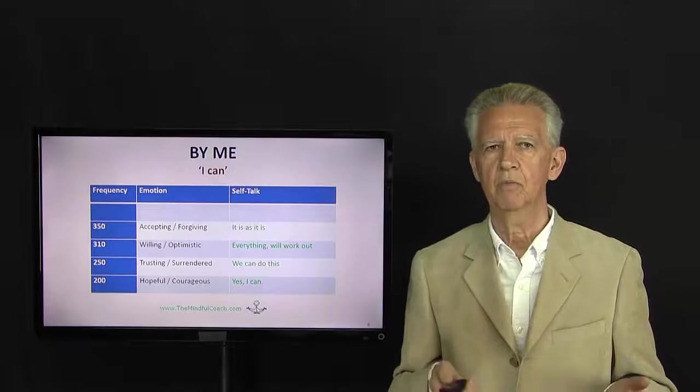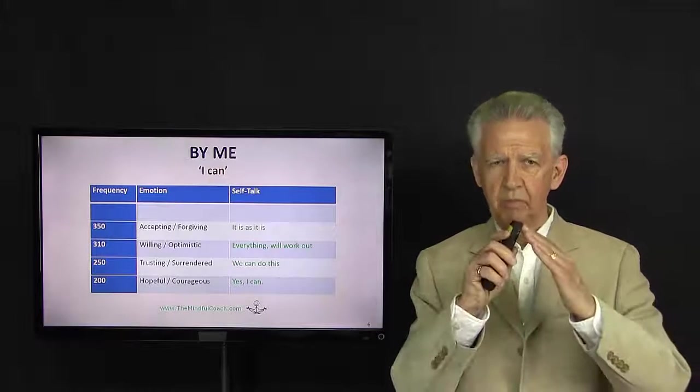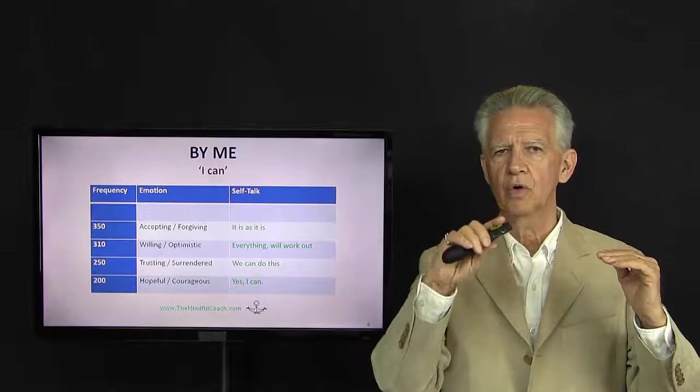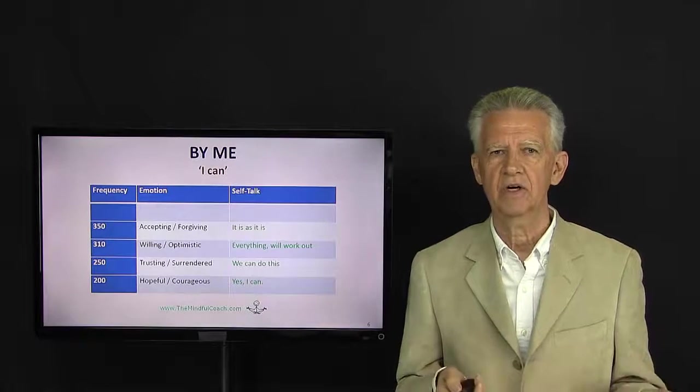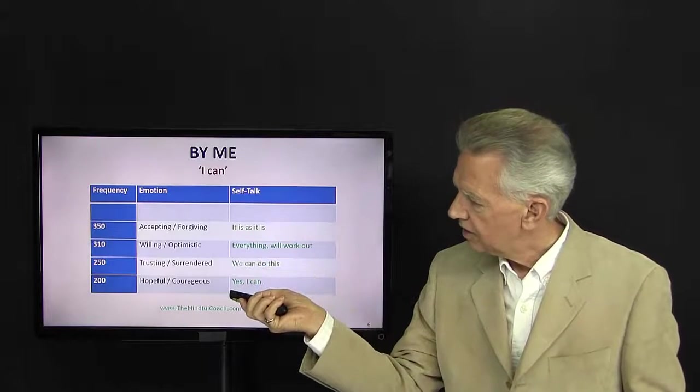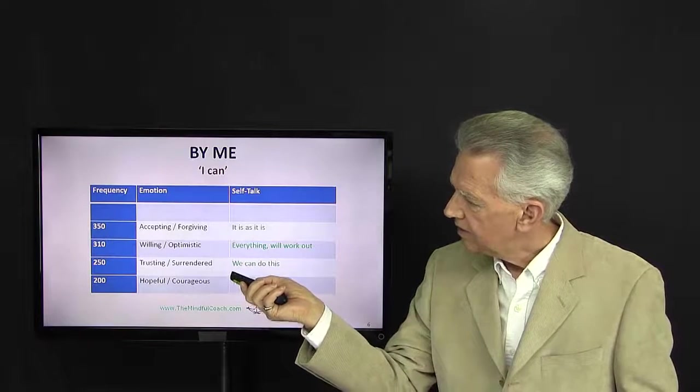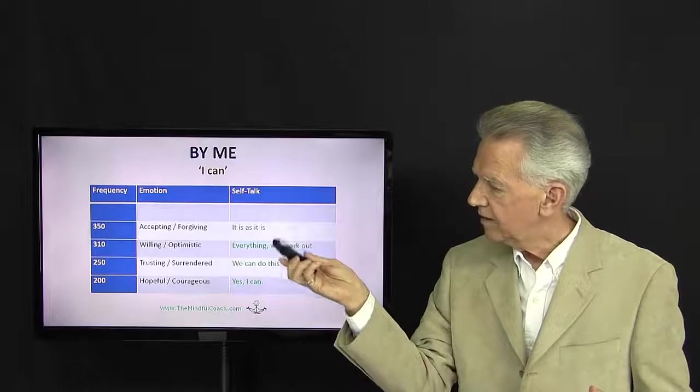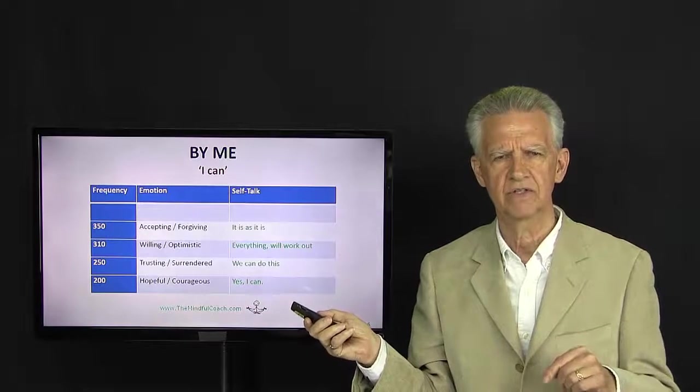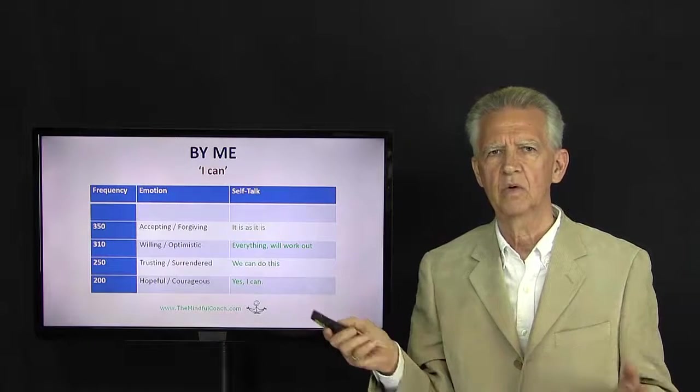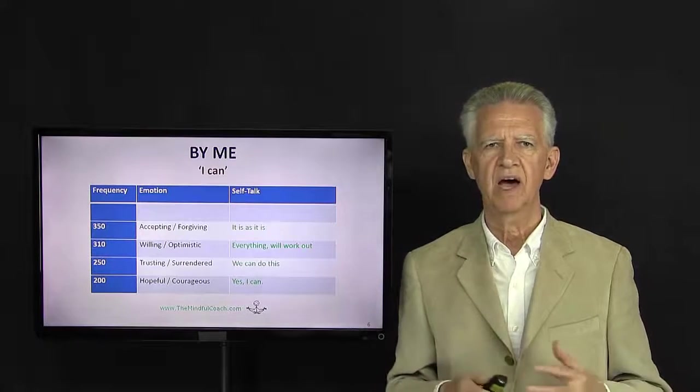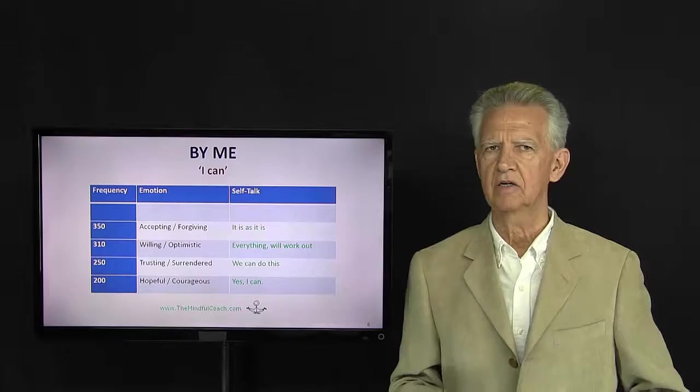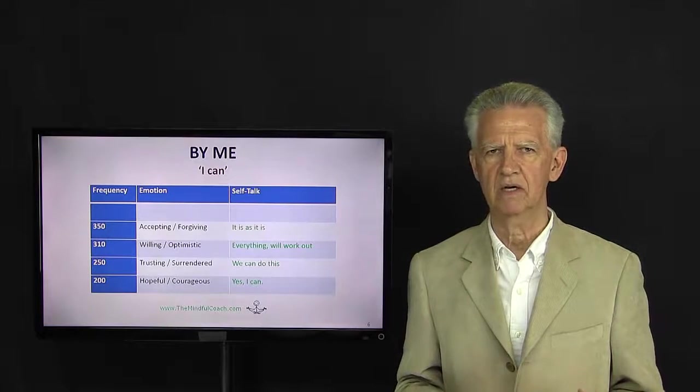So the next one is by me. Now by me is different. We have tipped the point and now we have gone into love. Where before we were more fear-based, now we're going into love-based. And it all starts with having courage. So we have courage here at 200, and then we have trusting, willingness and accepting, forgiving. And again, we can tell where we are just by the self-talk that we hear ourselves saying subtly to ourselves. So by me is so much different. It's that 'I can.' Yes, I can do this. And there's an energy and a strength and a power in just this by me. I can. I know I can. Yes, I can.